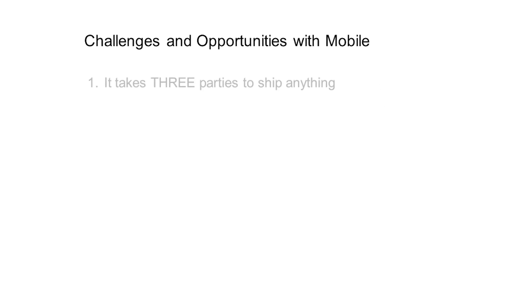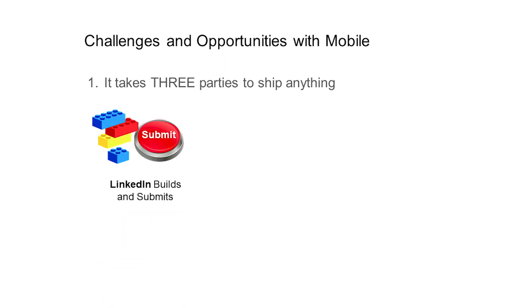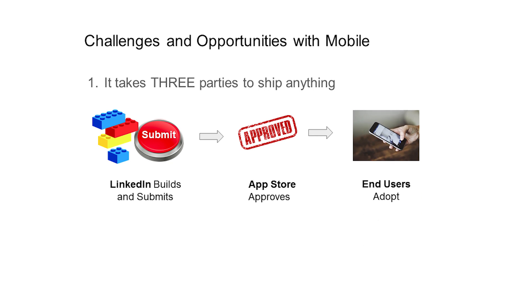The biggest difference between mobile testing and web testing, and also the biggest challenge, is that it takes three parties to ship anything. First, the app owner needs to build and submit the build. The app store then has to approve it. Finally, the end users need to adopt the new app version.